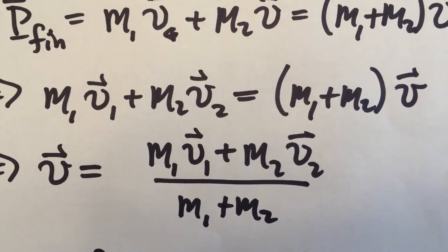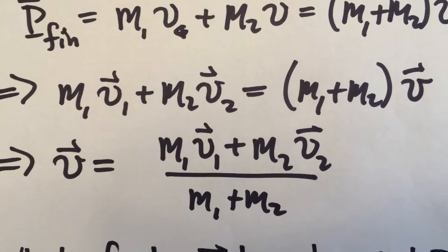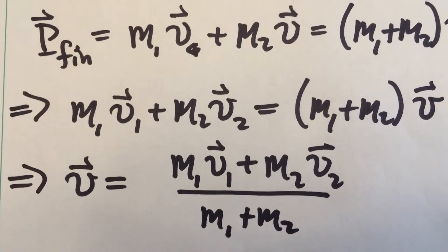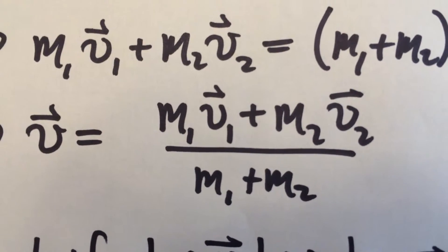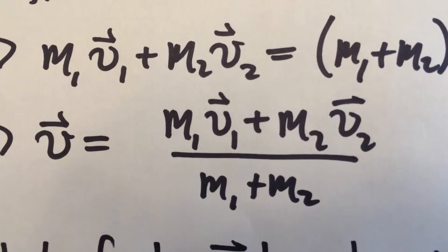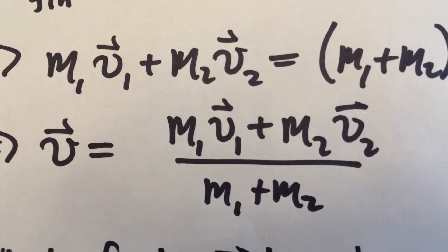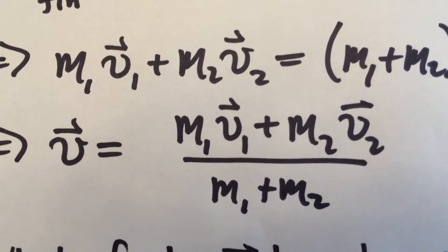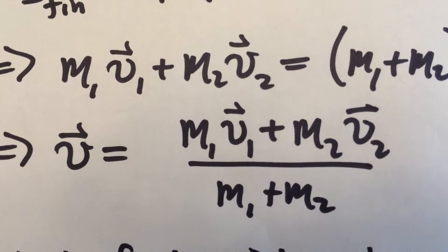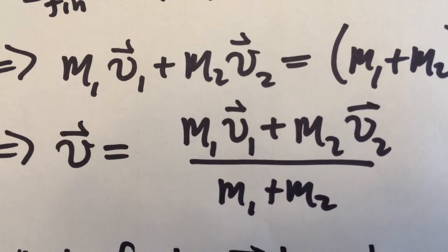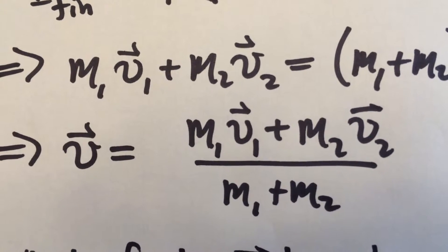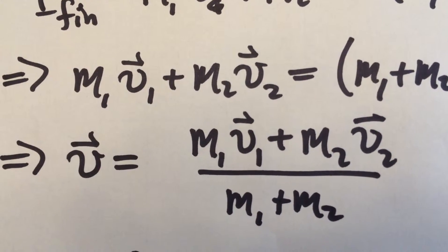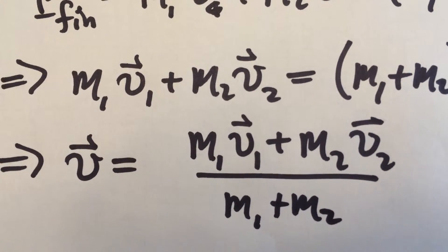Setting the left and right hand sides equal, we find we can solve for the final velocity vector v. So v equals particle one's initial momentum plus particle two's initial momentum, divided by the total mass of the system. This gives us a way to solve for the dynamics of the system without having to know all that much about it — we don't need conservation of energy, just conservation of momentum with no external forces.